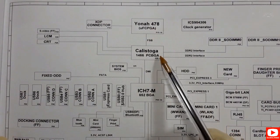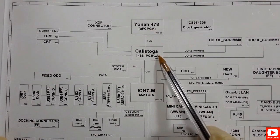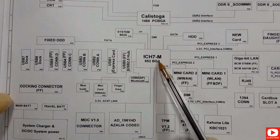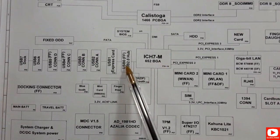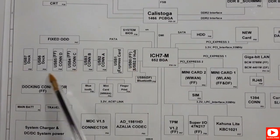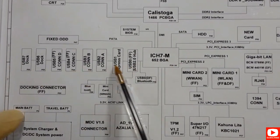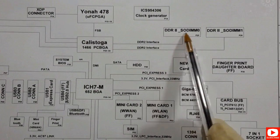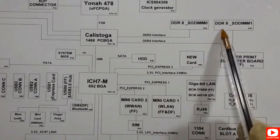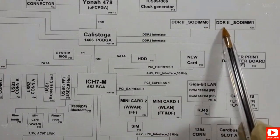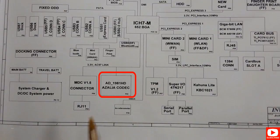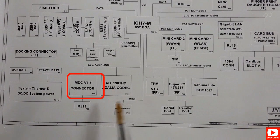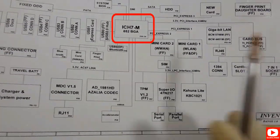This is a block diagram of a laptop motherboard. These squares represent chips and ICs. Each square here means an IC or a chip.